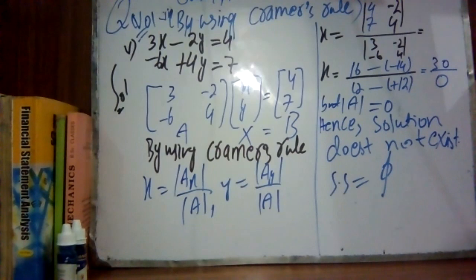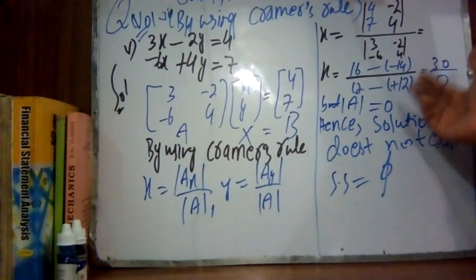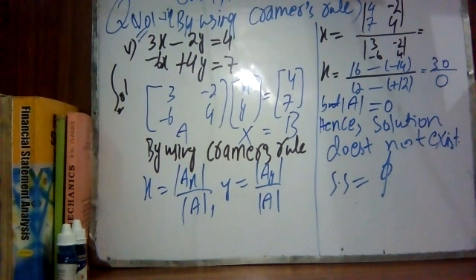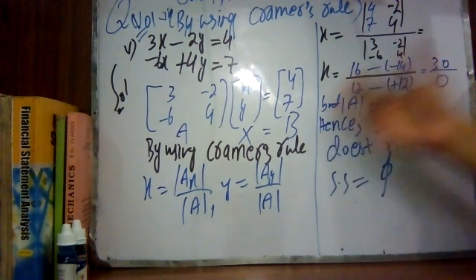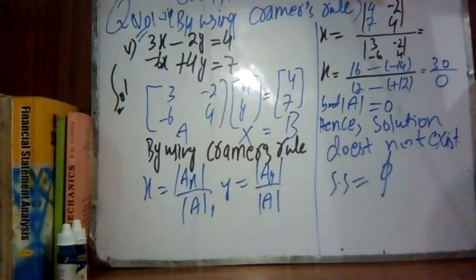Students, is it clear to everyone? The question could not be solved because the determinant is zero, so the solution does not exist. But you must understand how to write down the x values and y values using the process.